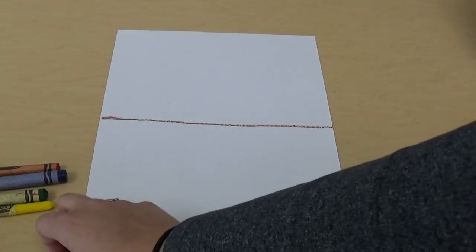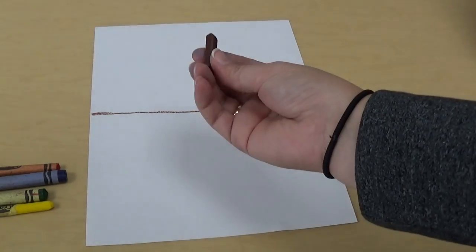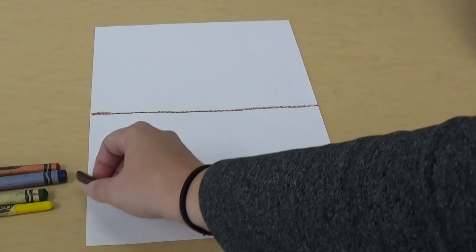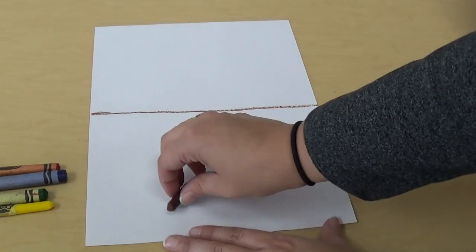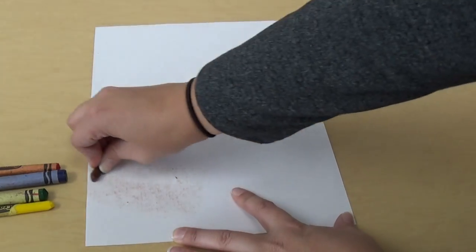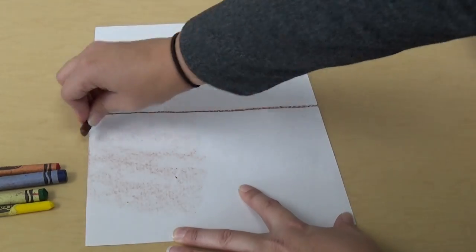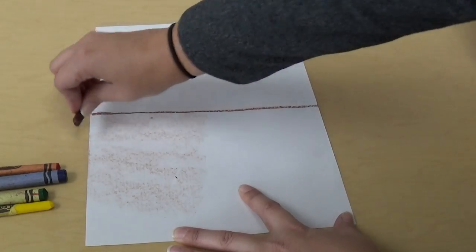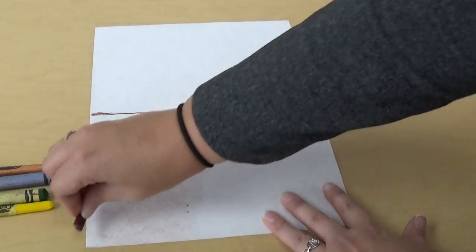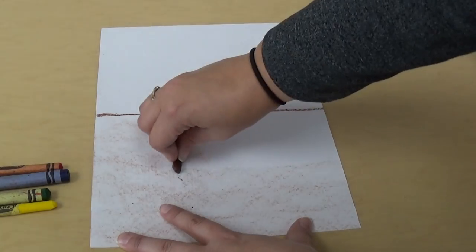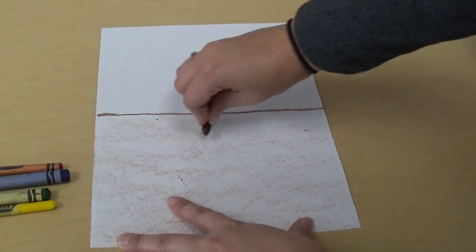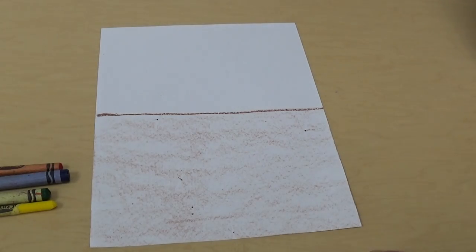And then down here is going to be dirt. So I'm going to take my crayon and lay it on its side. I'm going to fill in the dirt, just like this. And I know you guys were talking about dirt in class. We're going to talk about some of the things that grow in dirt. So now I've got dirt.